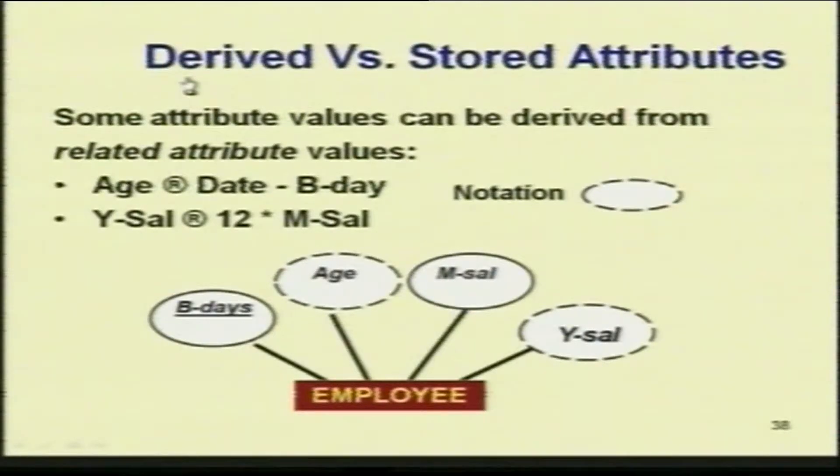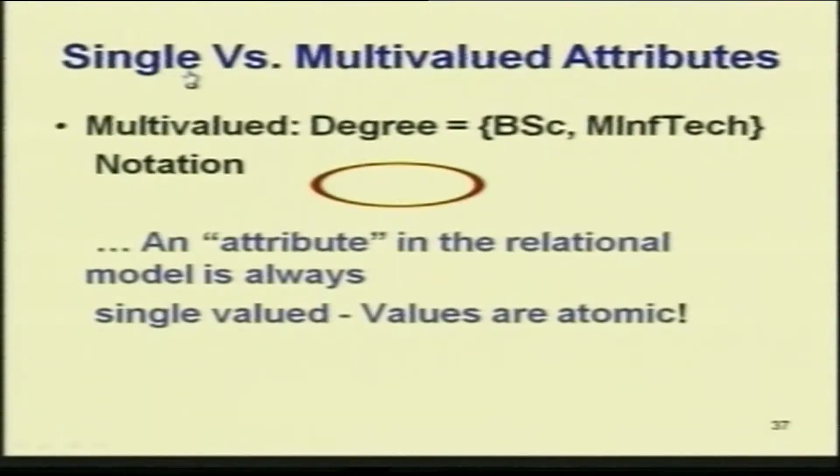In the ER model, multivalued attributes are given a special notation, but in the relational model we have the restriction that only single valued attributes are allowed. In ER modeling you can have multivalued attributes to understand the problem.